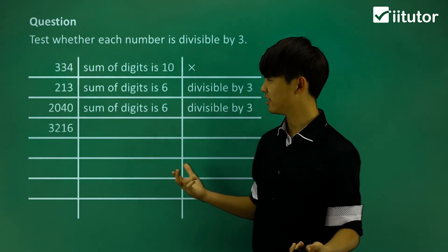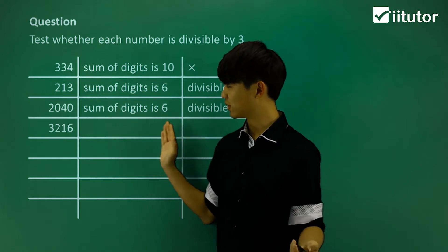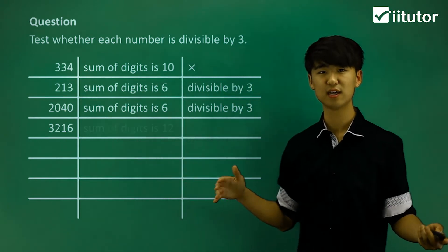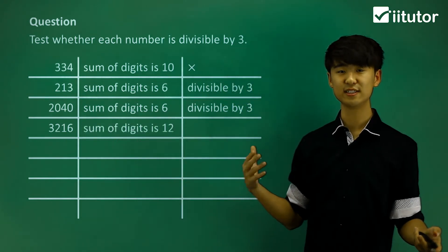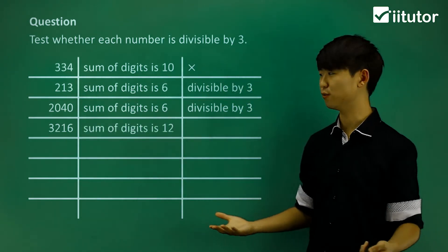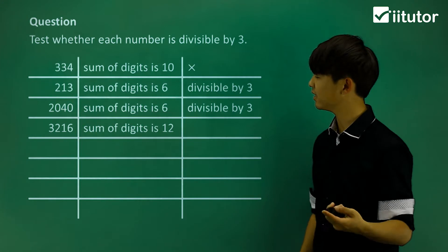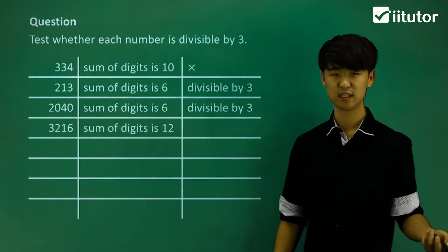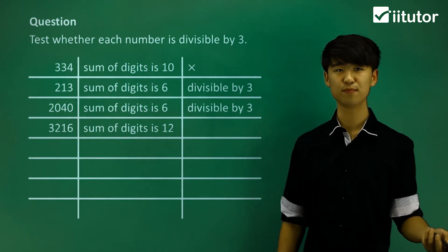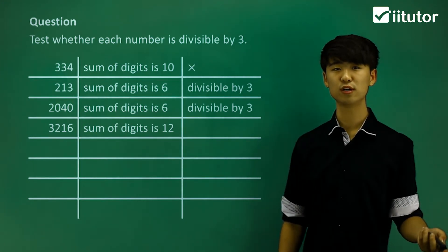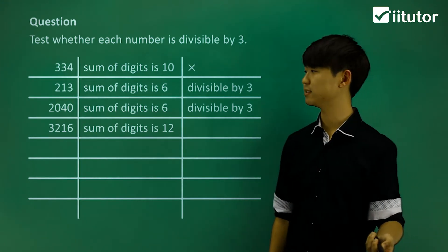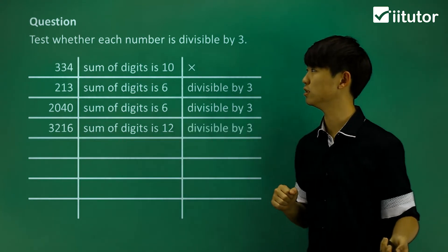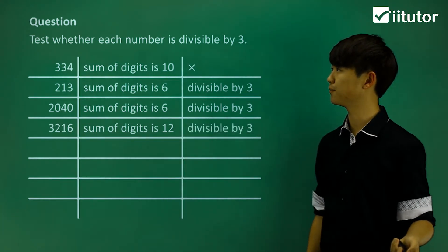3,216: so 3 plus 2 plus 1 plus 6. The sum of digits is equal to 12. And 12 is divisible by 3, as you all know, which means our number is also divisible by 3.